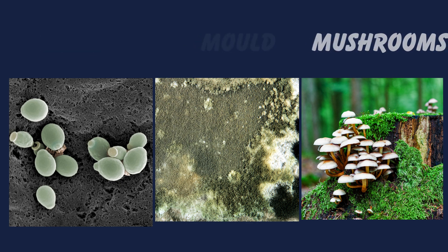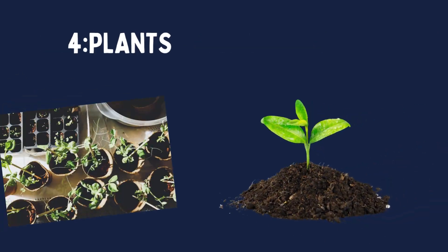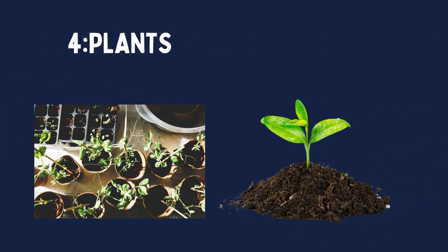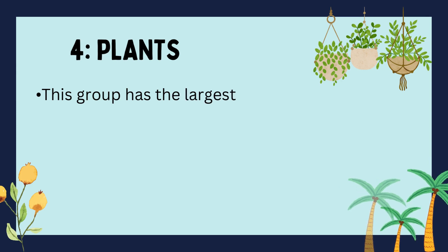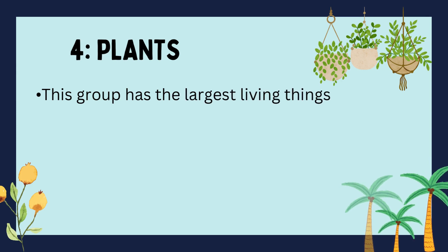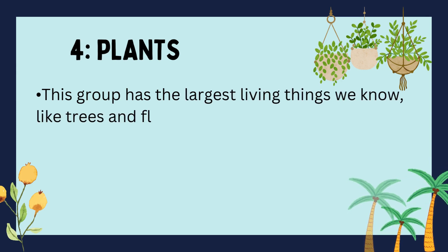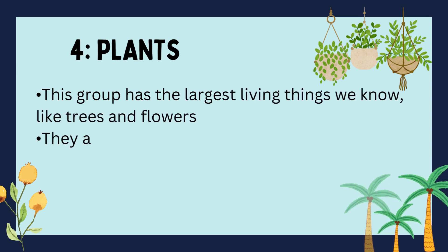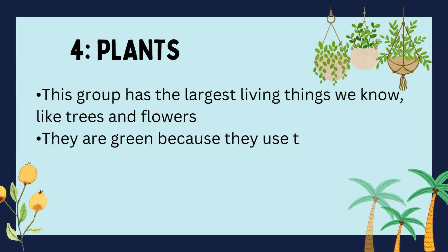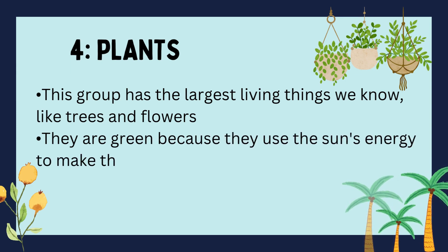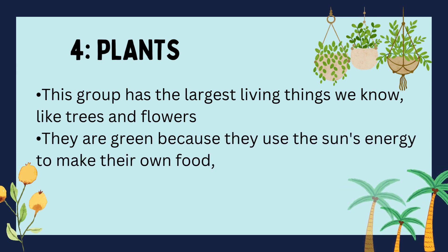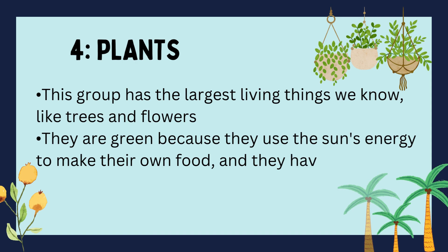Plants have a cell wall made of a special material called cellulose. They are green because they use the sun's energy to make their own food.